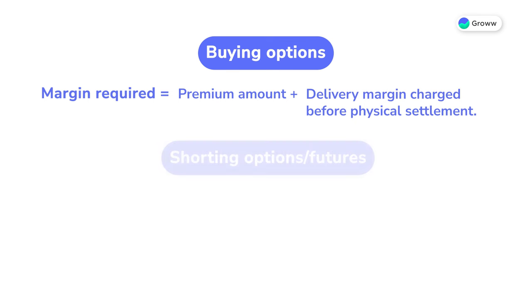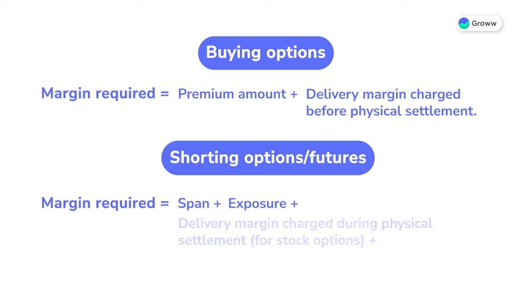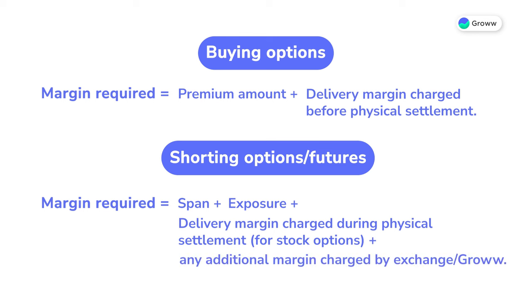For shorting options and futures, the margin required is equal to SPAN plus exposure plus delivery margin charged during physical settlement. For stock options, plus any additional margin charged by exchange or Groww.